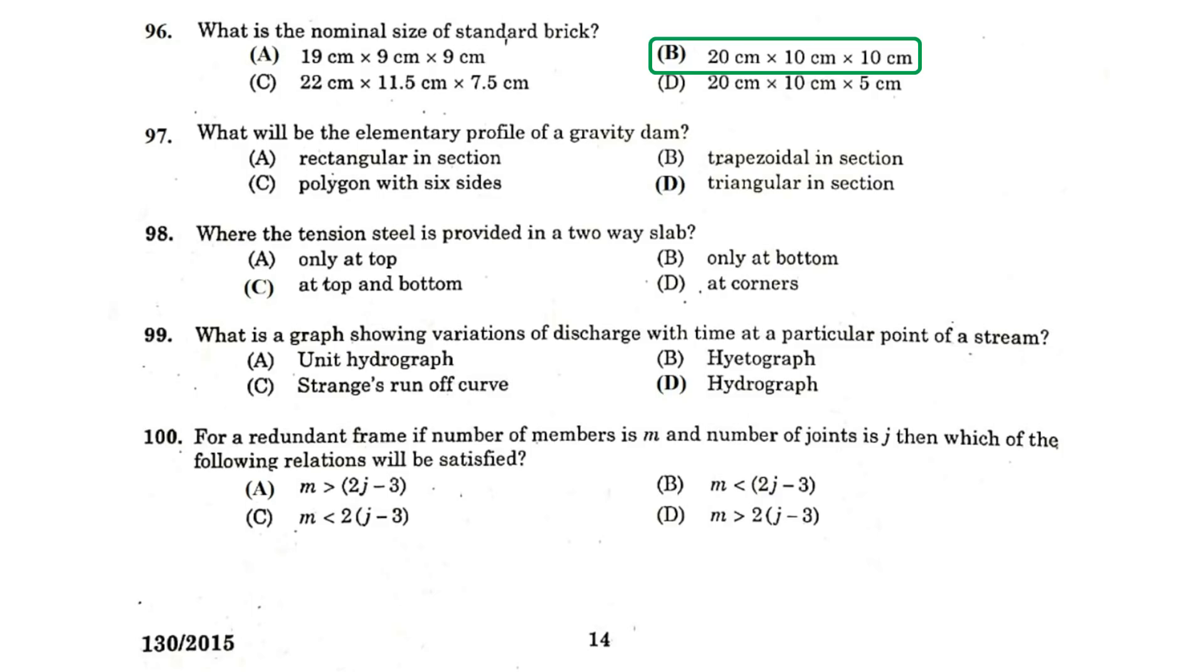What will be the elementary profile of a gravity dam? A triangular section. Where the tension steel is provided in a two-way slab? At top and bottom. What is a graph showing variation of discharge with time at a particular point of a stream? Hydrograph.